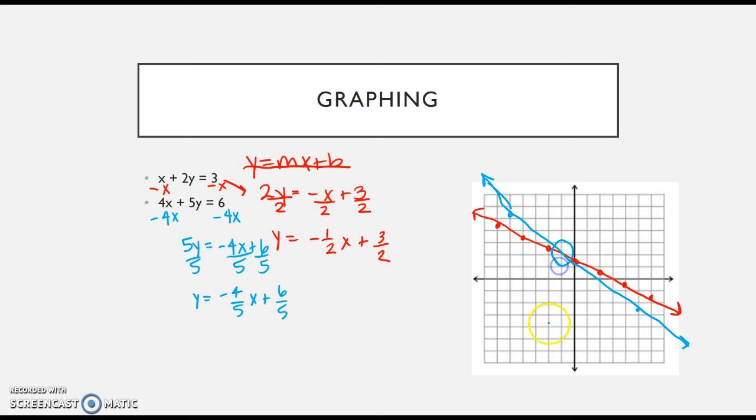The intersection is right here at negative 1, 2. Obviously you would not have a question this complicated on your test, but you've got to be able to graph anything. So we graphed our lines and found our solution at negative 1, 2.